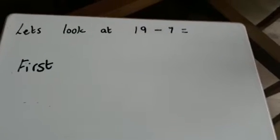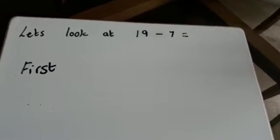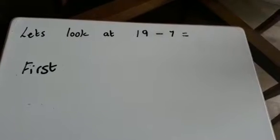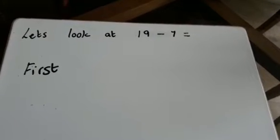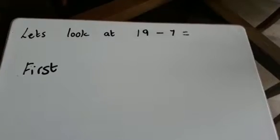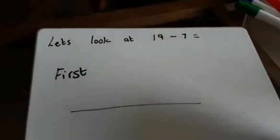As we're subtracting one digit from two digits, let's look at 19 take away 7 equals. First, draw the number line. I've drawn the number line here.